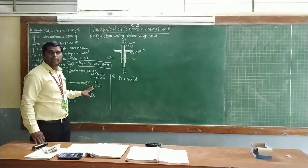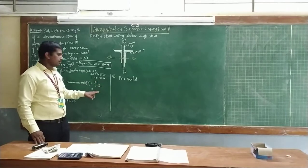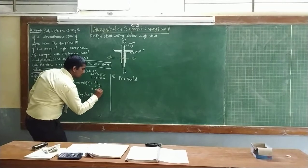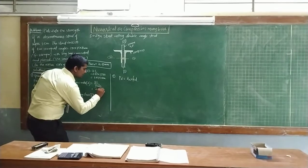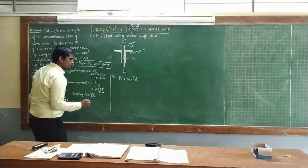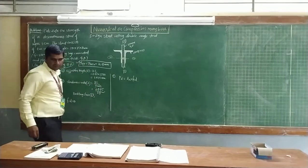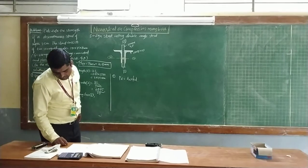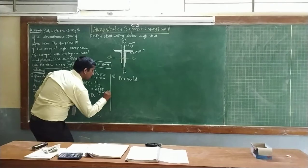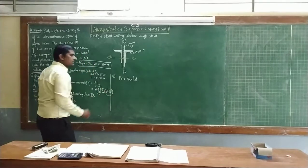The third point is to determine the slenderness ratio, lambda. Lambda is equal to KL by r minimum. We already found the KL value, which is 2975, divided by r minimum of 29.0. So the lambda value is equal to 102.58. This is your lambda value.